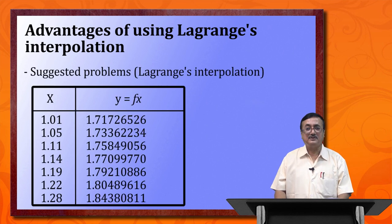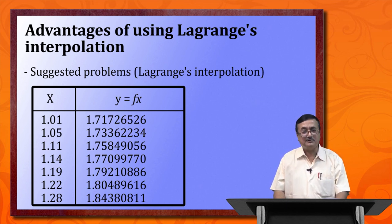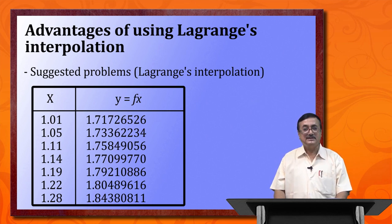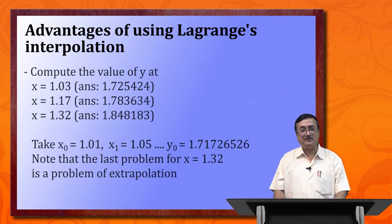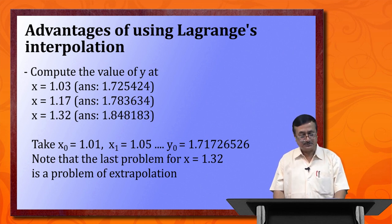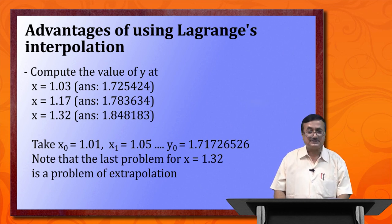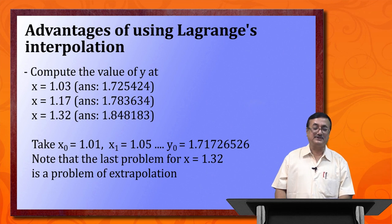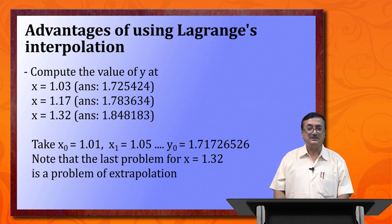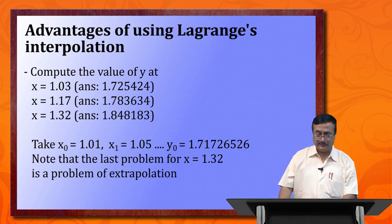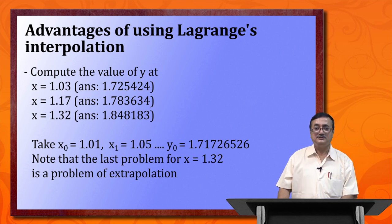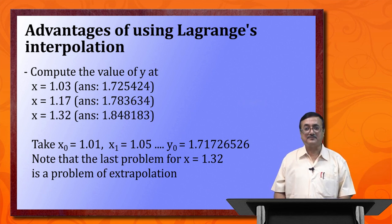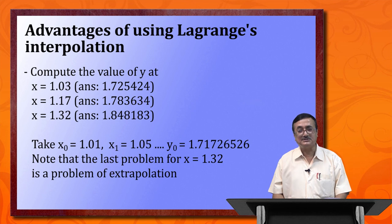Let me suggest some problems related to Lagrange's polynomial. Given a table for x with values 1.01, 1.05, 1.11 — notice that x is not equally spaced — we try to obtain the value of y at x = 1.03, or at x = 1.17 in the middle of the table, or at x = 1.32 at the bottom of the table. Note that x = 1.32 lies just outside the given table; in that case, the problem of interpolation is usually called a problem of extrapolation. The result will be accurate up to the last decimal digit.